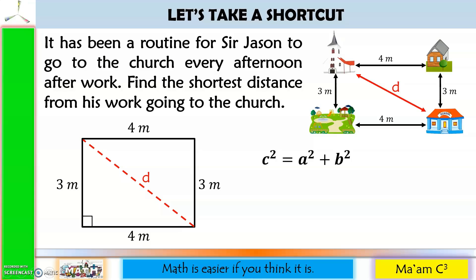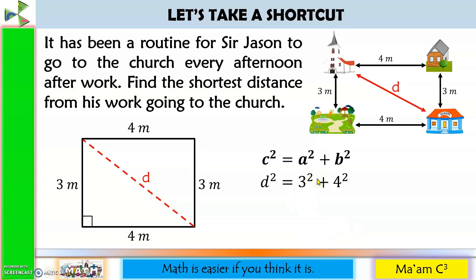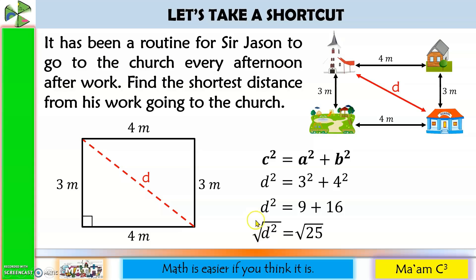C squared is equal to A squared plus B squared, where C is the longest distance in the triangle. Our C here is the distance d. I'll choose 3 for A and 4 for B. 3 squared is 9 and 4 squared is 16. 9 plus 16 is 25. To solve for d, we extract the square root on both sides — the index 2 and exponent cancel out. The square root of 25 is positive and negative 5. Since there is no negative distance, we choose positive 5. So the shortest distance from the school going to the church is 5 meters.